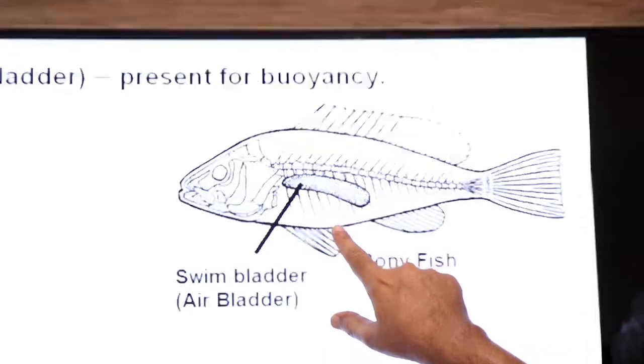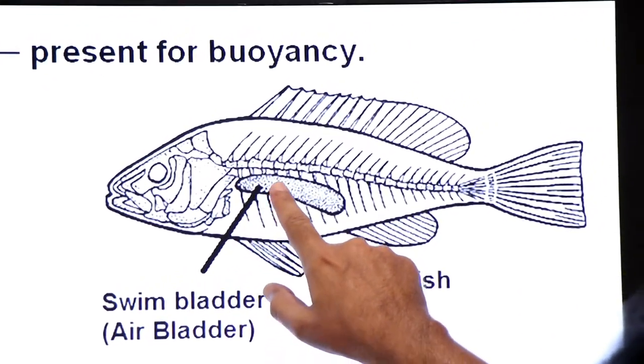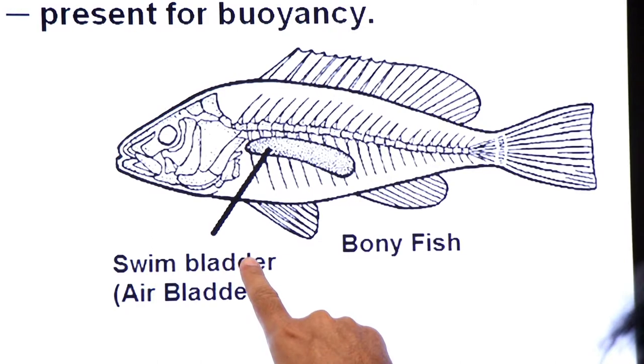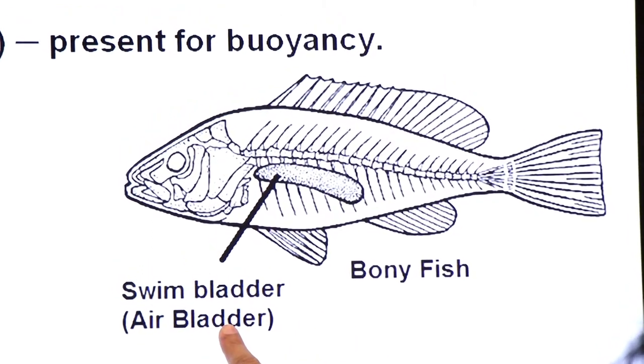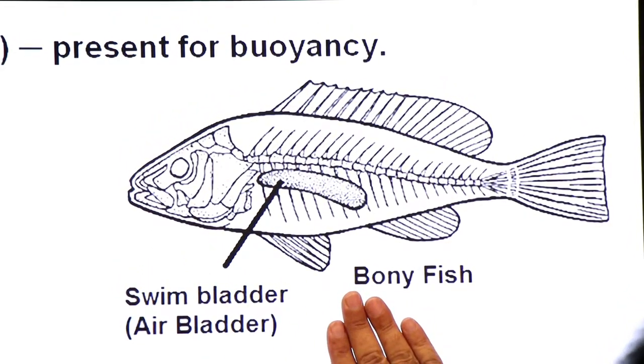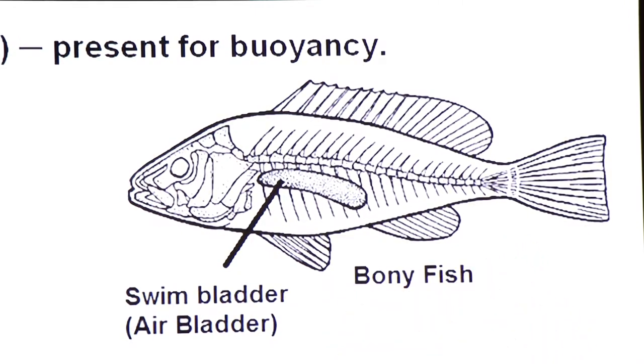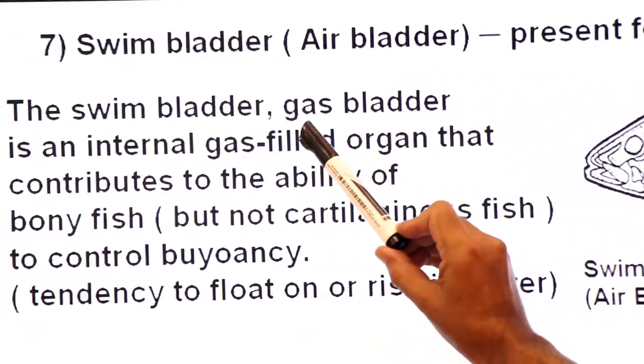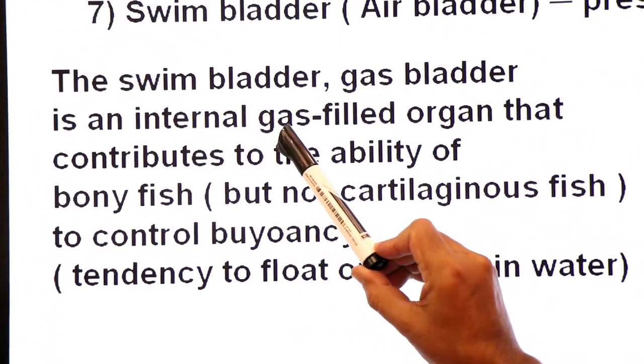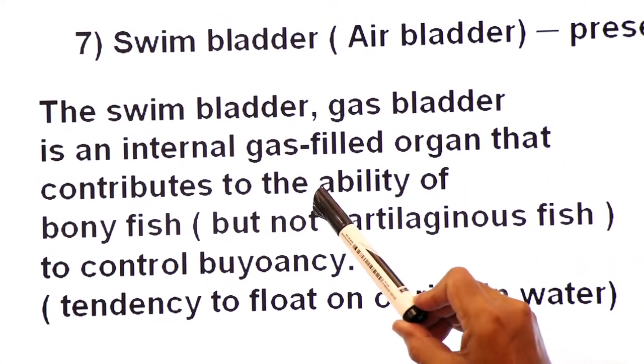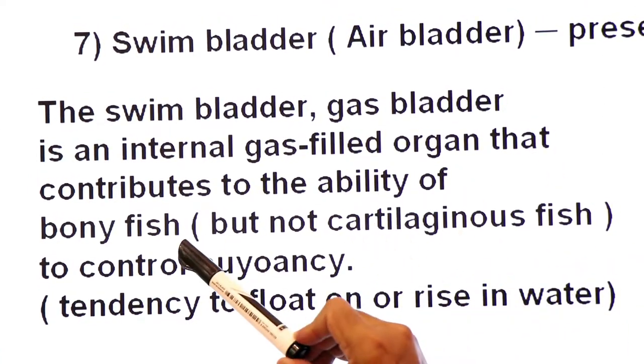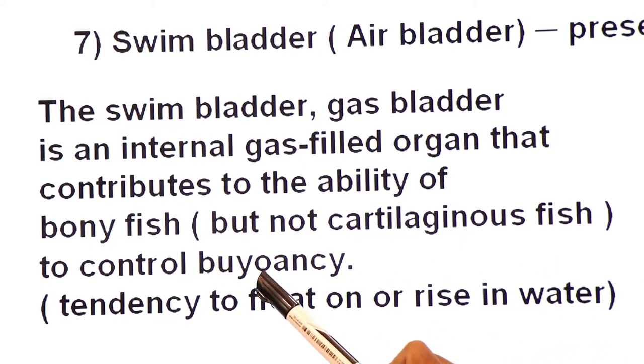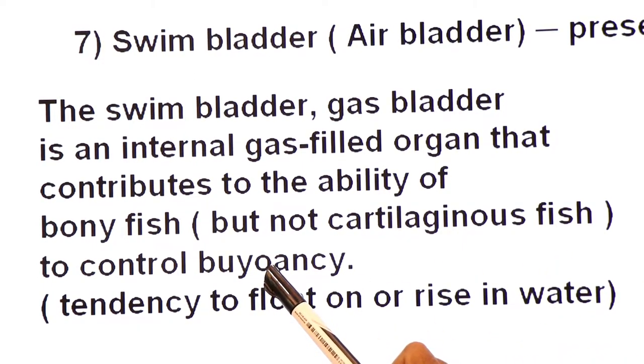Now look at the diagram of this bony fish. Here you see a sac-like structure, a gas-filled bladder known as swim bladder, also known as air bladder, which is only in bony fishes. But this air bladder is absent in cartilaginous fishes. Now the swim bladder, gas bladder is an internal gas-filled organ that contributes to the ability of bony fish, but not cartilaginous fish, to control buoyancy. What is buoyancy? Tendency to float or rise in water.